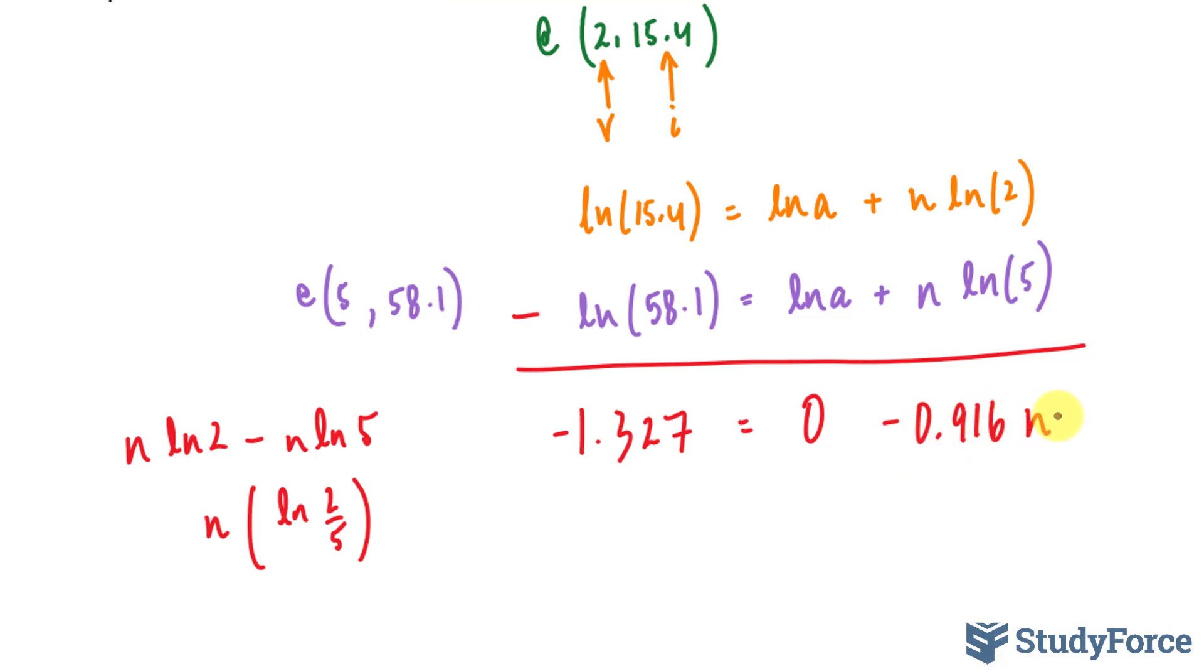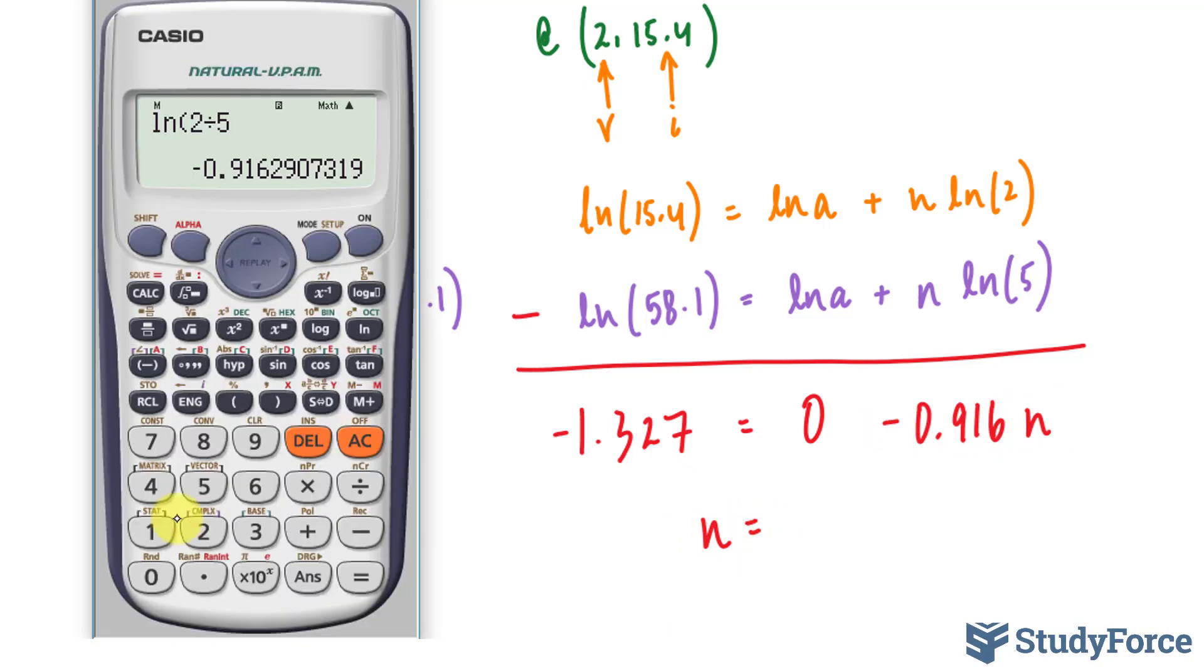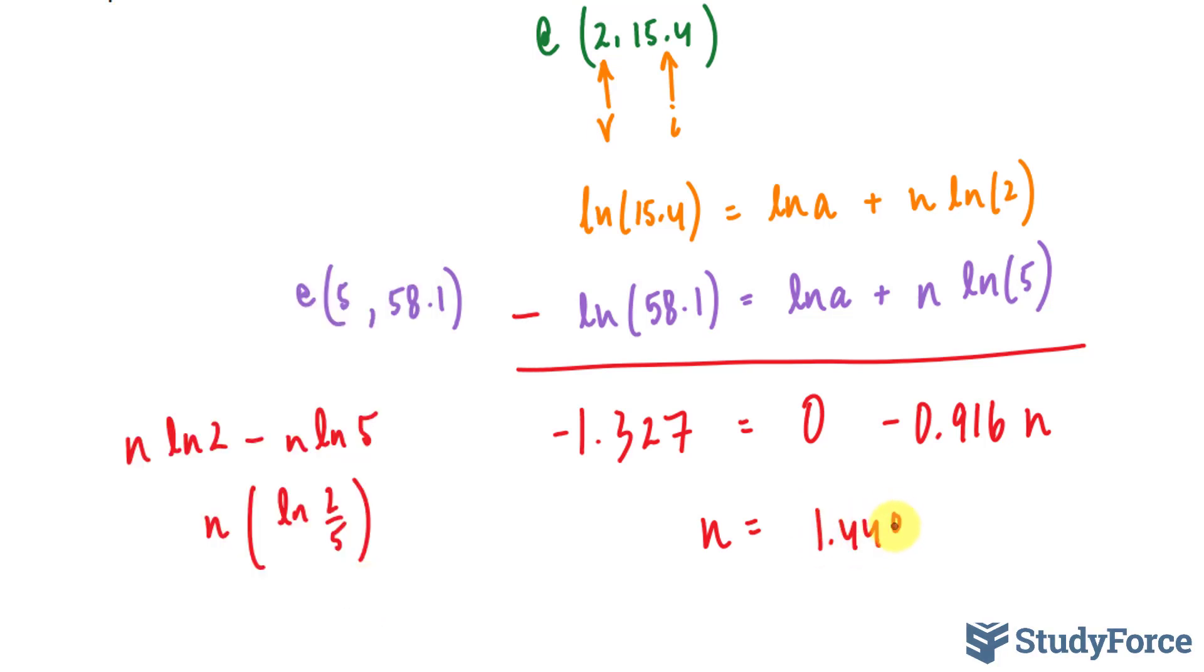We divide both sides now by this number to find out what our n is. Therefore, n is equal to negative 1.327 divided by what we just found. And that's equal to 1.448, or in other words, 1.45.